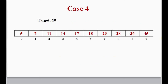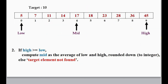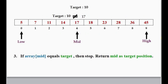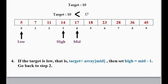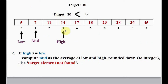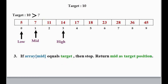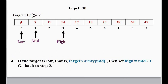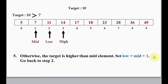The last case: we search for an element not present in the sorted array. As usual, we set low and high, find mid, and check array[mid] equals target — no. Second condition: target is less than 17 — yes, it is less than 17, so we set high equal to mid minus 1 and go back to step 2. We compute mid again: 0 plus 3 divided by 2 gives 1.5, rounded to 1. Mid is pointing to 7. We check if array[mid] equals target — no. Target is greater than 7, so target is not less than array[mid]. The last condition: we set low equal to mid plus 1, pointing to index position 2.